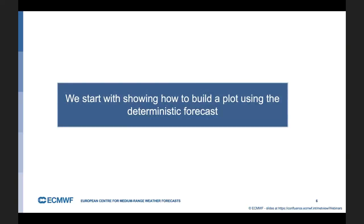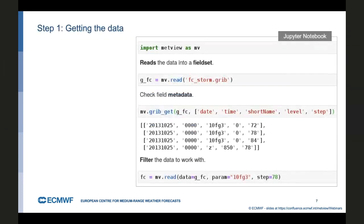We'll start with showing how to create a plot. And for simplicity, we will use the deterministic forecast for it. To create the plot, first we need to get the data. This is our code. It's a Jupyter notebook. In the first line, we import Metview as MV. That's the convention. It means we need to prefix all the Metview commands with the MV dot prefix. We're reading our GRIB data from the GRIB file using the read command. The result is a fieldset. Fieldset is Metview's own object to represent GRIB data.